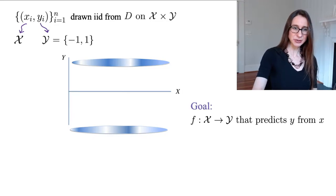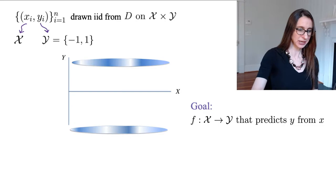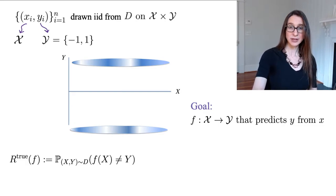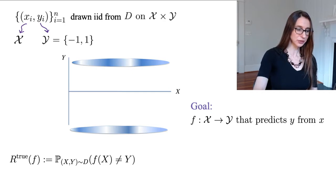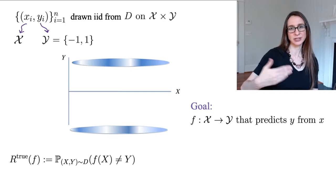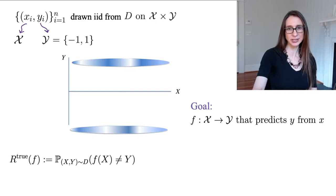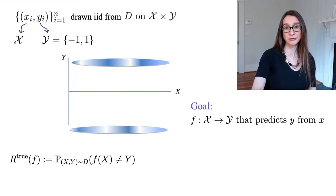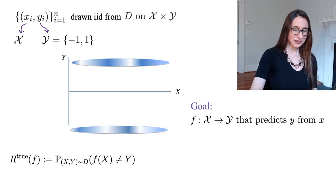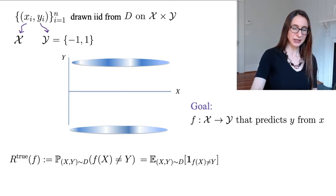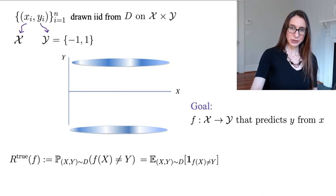Our goal is to produce a function that goes from X to Y that predicts Y from X. The way we're going to measure the quality of F is using the true risk, which is the probability that F of X does not equal Y, and we want that true risk to be as low as possible. We can't compute the true risk because it requires us to know the entire distribution the data are drawn from. Another way to write this probability is the expectation of the indicator function that F of X does not equal Y.